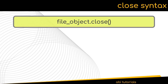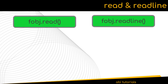The syntax for the close function has the close function added after the file object which you need to close. Once we open the file using the open function, we can make use of two functions to read from the opened file: the read and the readline functions.